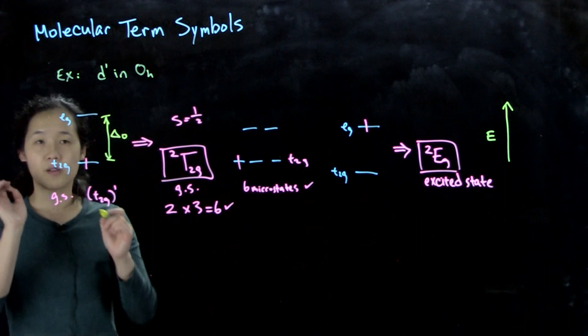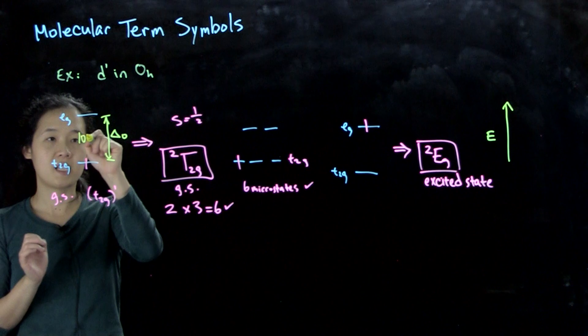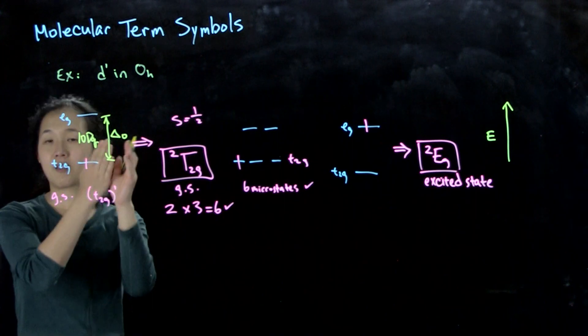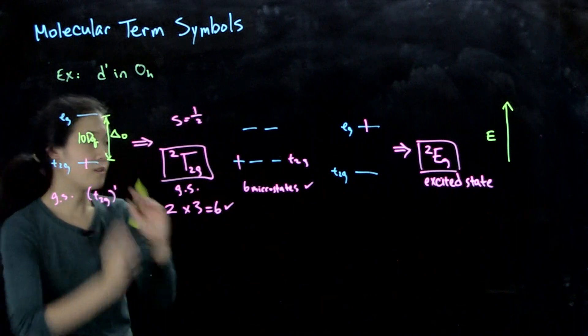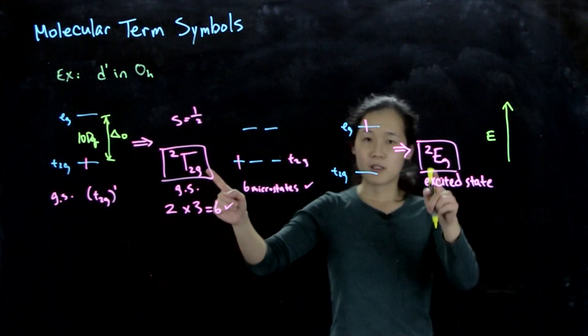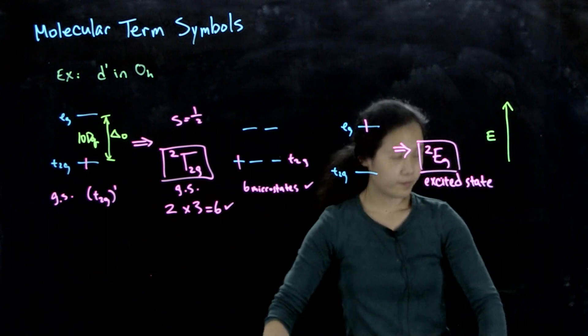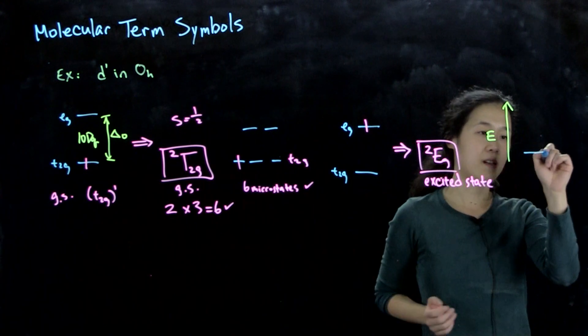I want to point out in the literature, you might also see this called as 10Dq. And this also means the same thing as your ligand field splitting. So 10Dq equals ΔO. So we want to think about the energy differences between our ground state and excited state. Then we have our ground state we know is our doublet t2g.